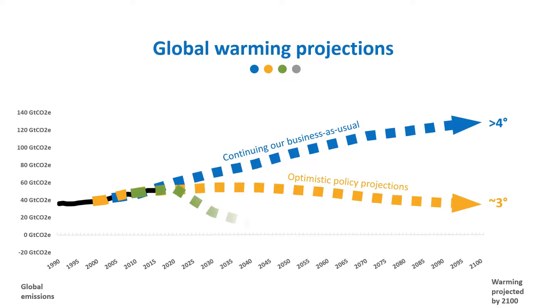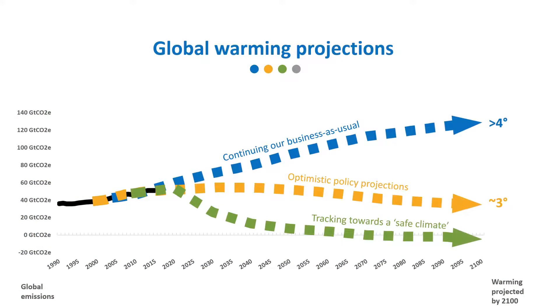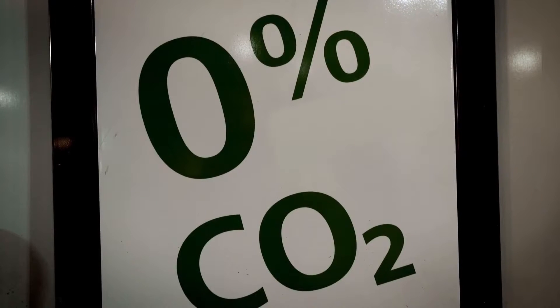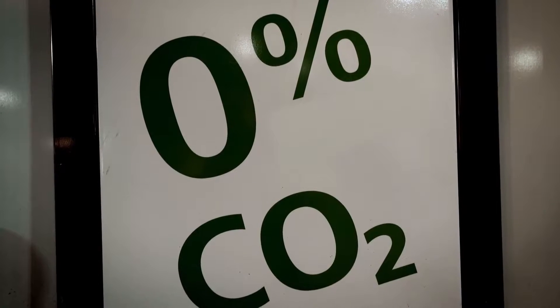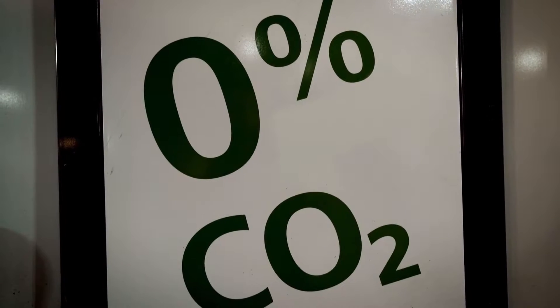Science based targets are greenhouse gas emissions reduction targets that are consistent with the level of decarbonisation that is required to keep global temperature increase within one and a half degrees Celsius compared to pre-industrial temperature levels. Science based targets are consistent with the long term goal of reaching net zero emissions in the second half of this century as per the Paris Agreement.